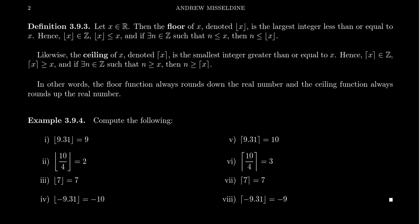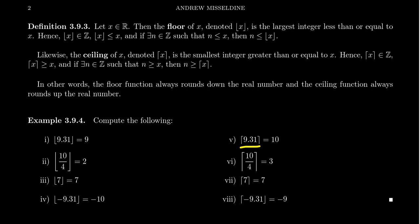Now let's consider ceilings — it's basically the same calculation. The ceiling of 9.31 rounds up to 10. The ceiling of 10 fourths, which is the same as 2.5, rounds up to 3 — the smallest integer greater than 10 fourths. The ceiling of an integer itself gives back that integer, so the ceiling of 7 is 7. With negatives, you have to be careful: the ceiling of negative 9.31 gives you negative 9, because rounding a negative number up gets you to negative 9, which is larger than negative 9.31 with no other integer in between.